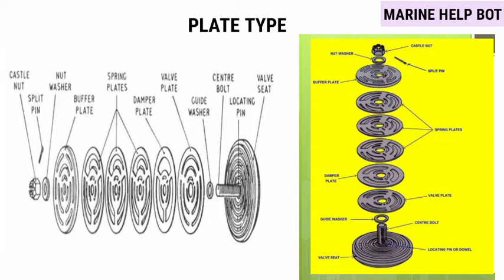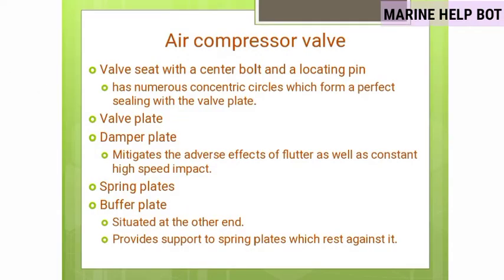The parts of a plate type valve include: buffer plate, spring plates, damper plate, valve plate, and valve seat. The valve seat has a center bolt and locating pin with concentric circles that form a perfect seal with the valve plate. The damper plate mitigates the adverse effect of flutter and constant high-speed impact. The buffer plate is situated at the other end and provides support to the spring plates which rest against it.